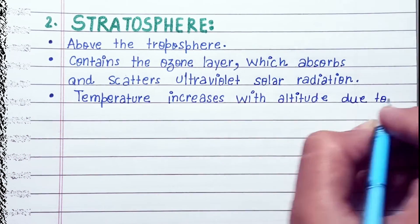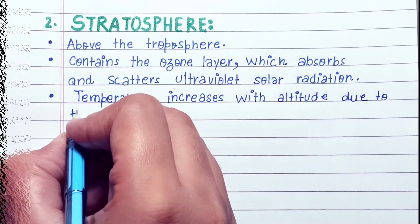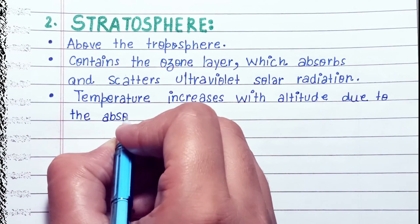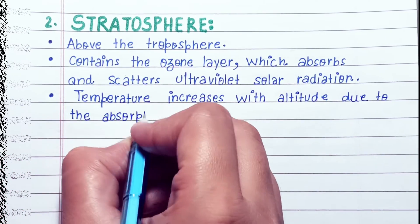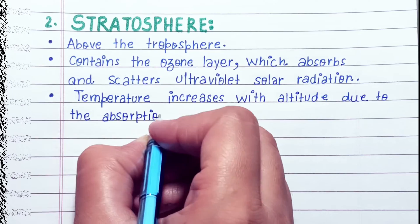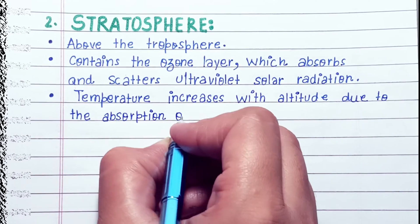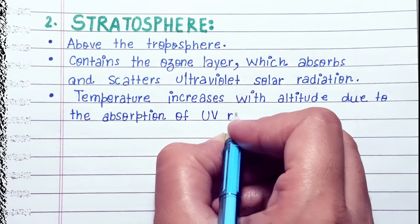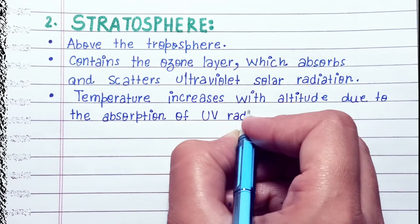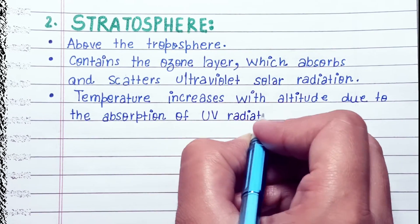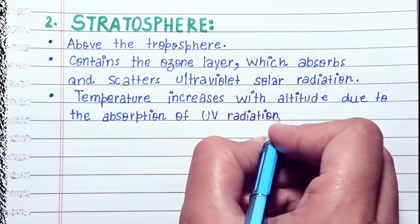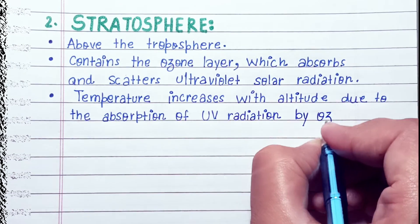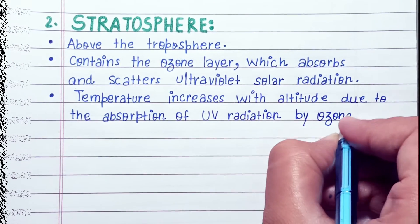Stratosphere — above the troposphere, contains the ozone layer which absorbs and scatters ultraviolet solar radiation. Temperature increases with altitude due to the absorption of UV radiation by ozone.